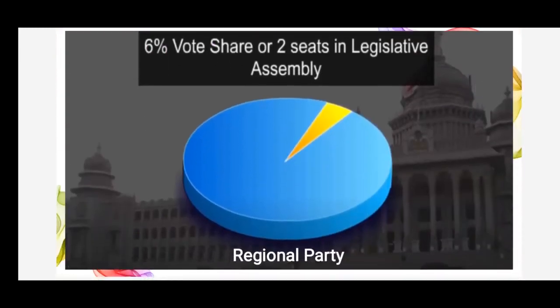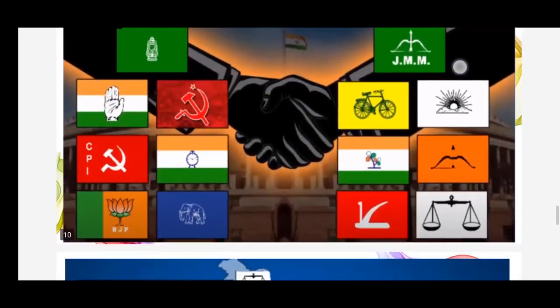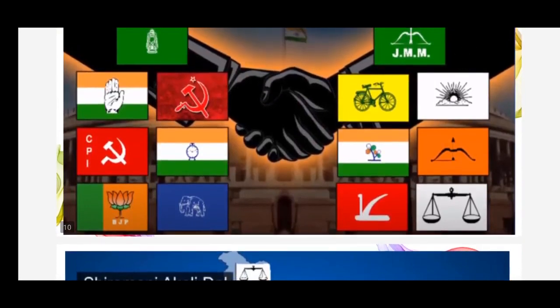Any party that secures at least 6% of the total votes in the Legislative Assembly of a state or wins two seats is recognized as a State Party or Regional Party. Over the last decade, the strength of the State Parties has increased and made Parliament more diverse. As no single party has been able to win a majority, national parties are dependent on State Parties to form an alliance — that means giving support, coming together as one. For example, UPA — United Progressive Alliance.